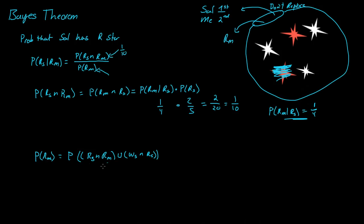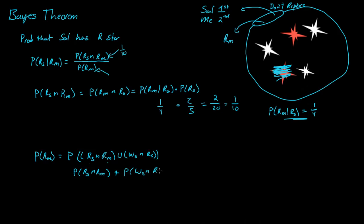Now, are these mutually exclusive events? Can both occur at the same time? They cannot — if one occurs, the other can't. So they're mutually exclusive. We can break this into the probability of Sal getting a red star and me getting a red star, plus the probability of Sal getting a white star and me getting a red star. We know the first part is one-tenth.